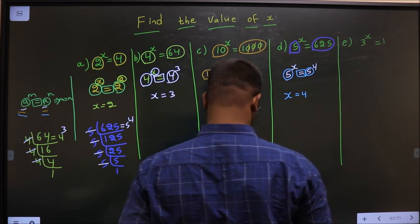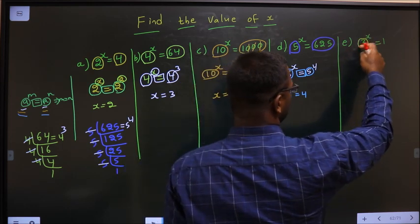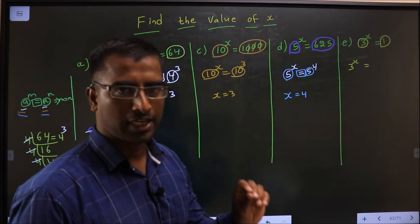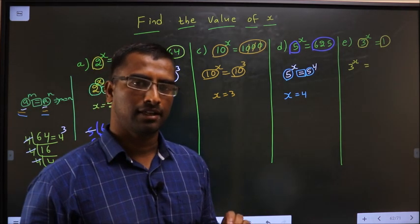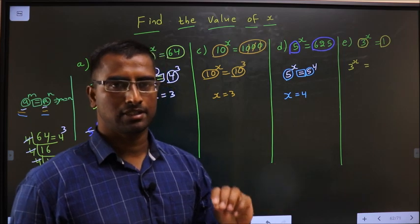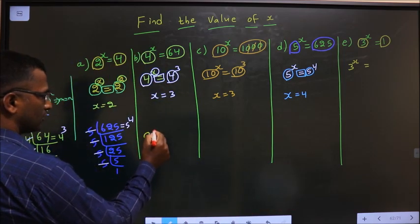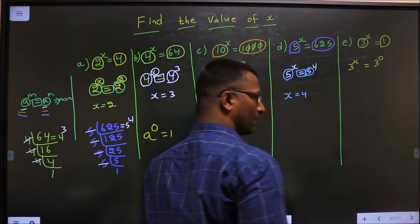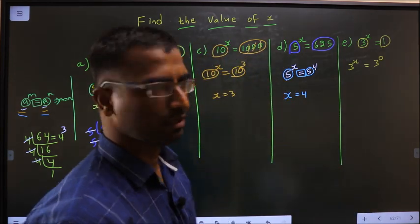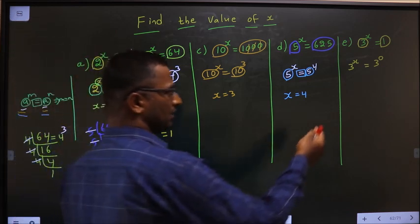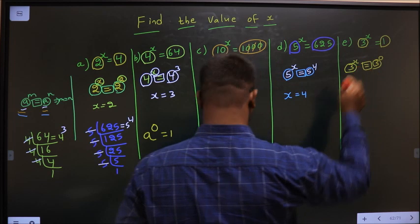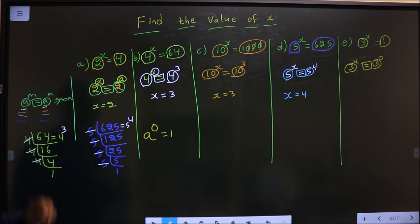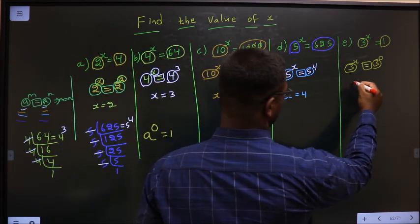Next problem: 3 power x equal to 1. The base is 3, so write 1 also with base 3. Remember: anything to the power 0 is 1. So in place of 1, write 3 power 0. Now observe: bases are same and equal to is present. Apply the rule — bases are same, equal to is present, so equate the powers. x equal to 0.